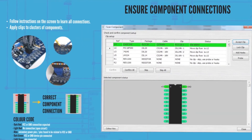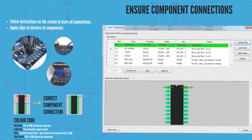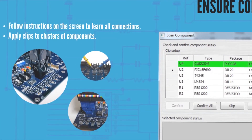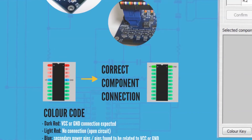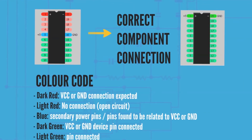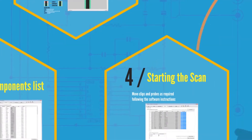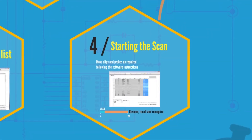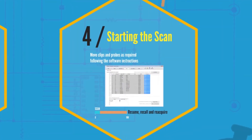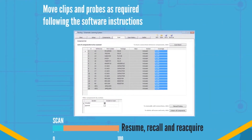Follow the instructions on the screen and attach probes, hooks, connectors, and test clips to the devices, paying attention to the correct orientation. Run the scan when instructed by the software to do so, and move the clips and probes around the PCB to cover 100% of the possible connections.